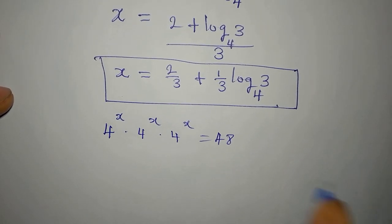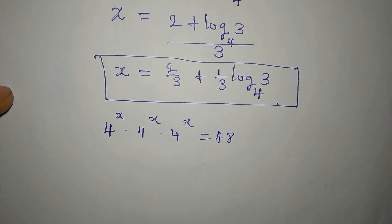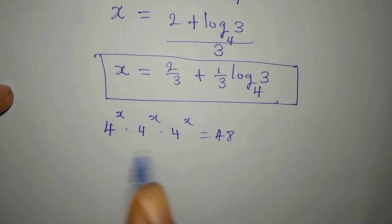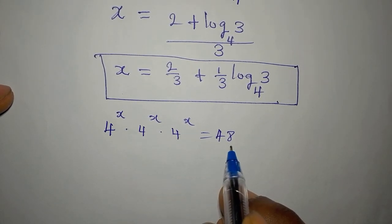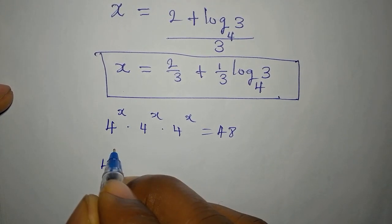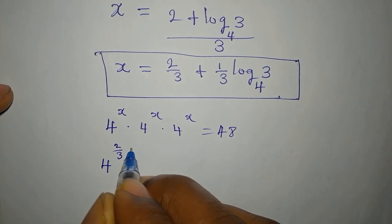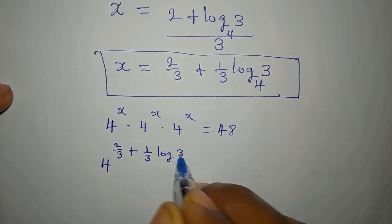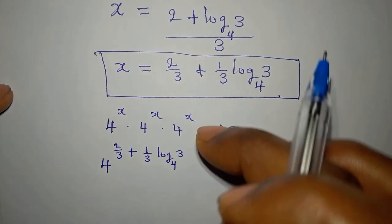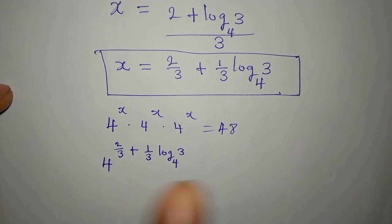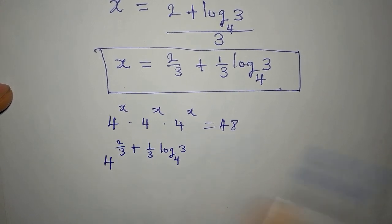Now let us substitute this value back to confirm. I need you to sit back and follow, because this verification will be more complex than the working we have done so far. Our x is the whole expression 2/3 plus (1/3)log₄3, and we place it into 4 to the power of x in three places.